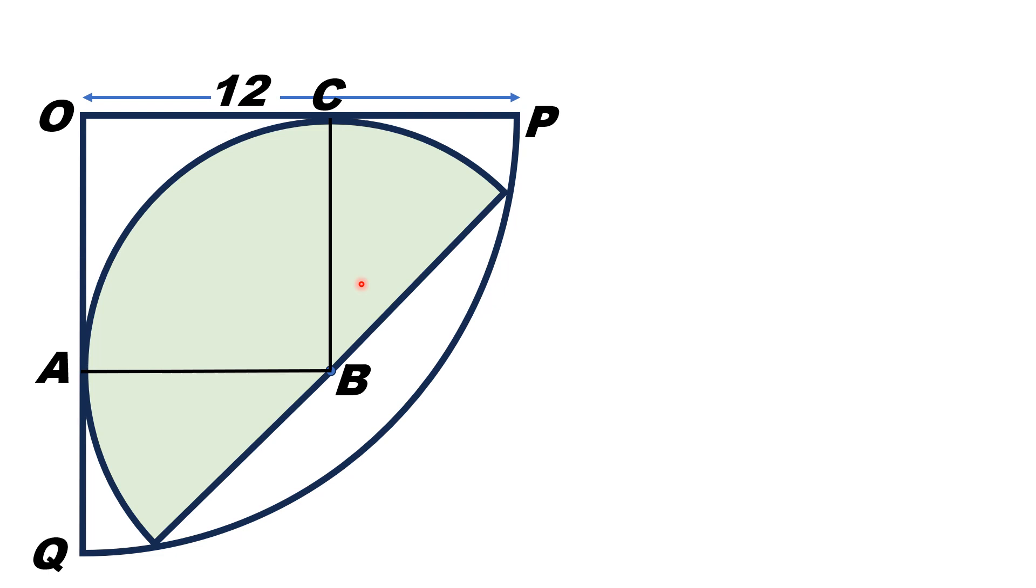Now it is very much clear that at point C the angle OCB is a right angle, because BC is the radial line and OP is the tangential line, so radial line is always perpendicular to the tangential line, so the angle OCB is 90 degrees.